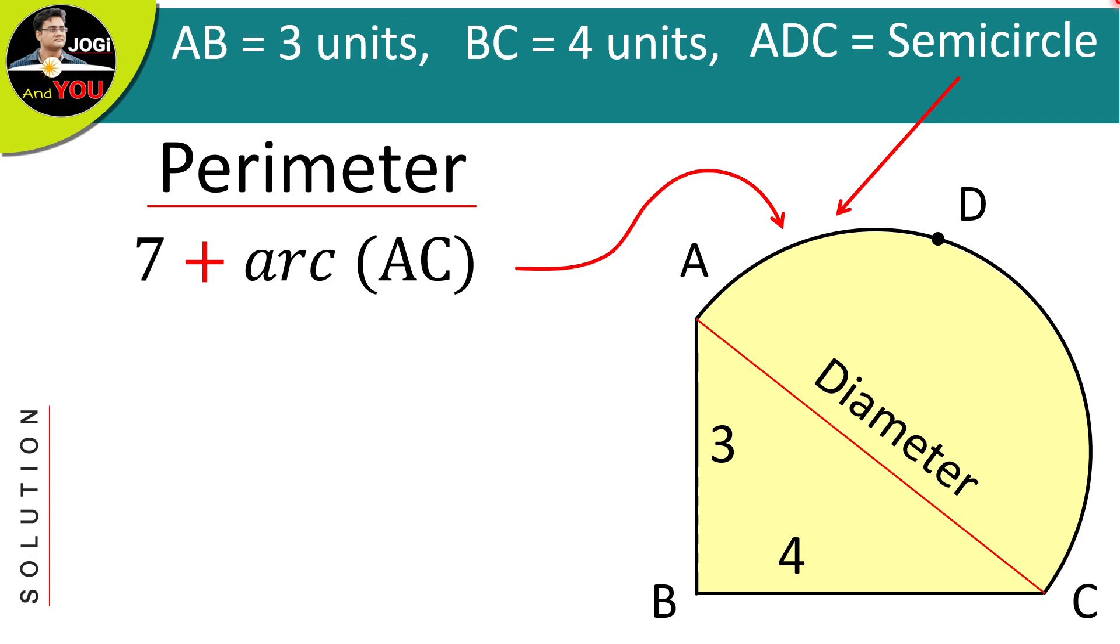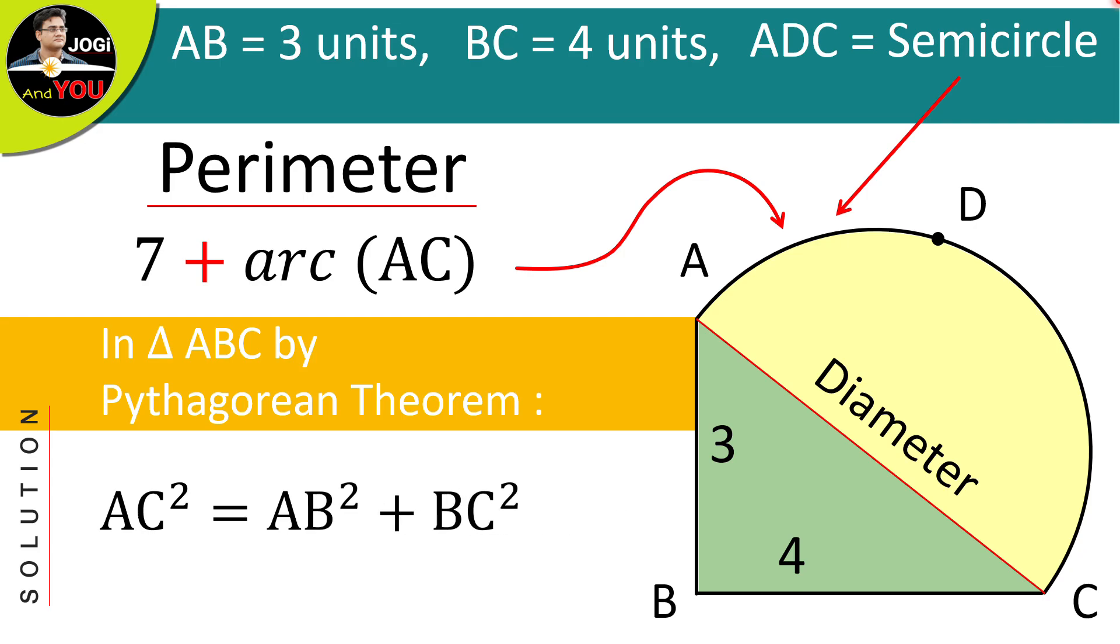So now, in the right triangle ABC, by the Pythagorean theorem, we can write AC squared is equal to AB squared plus BC squared.